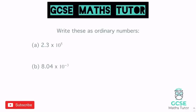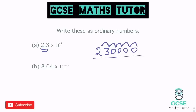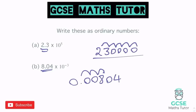For converting back to ordinary numbers: take 2.3 × 10⁵. I imagine where the decimal is between the 2 and 3, and times 10 to the power of 5 makes it a big number, so I hop it 5 places to the right, filling in zeros: 230,000. For 8.04 × 10⁻³: negative 3 means it's a small number, so I jump the decimal 3 places to the left, filling in zeros, giving 0.00804.